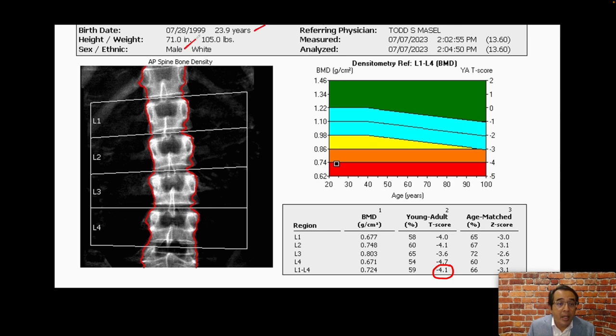We know that the WHO criteria that we use to give a T-score to the DEXA patients applies only to postmenopausal Caucasian women or men older than 50 years of age, so it does not apply to this young male, so we cannot use the T-score.